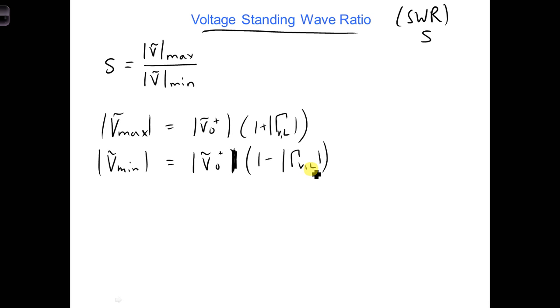Then we can plug these in, we can cancel the V0 plus terms, and we're going to get a more simple expression. We get one plus the reflection coefficient magnitude, and one minus the reflection coefficient, the voltage of the load.